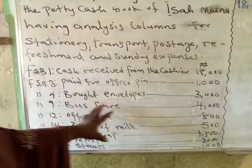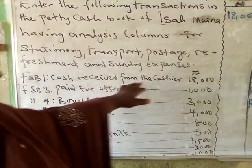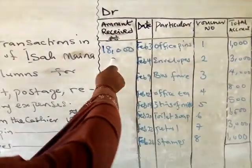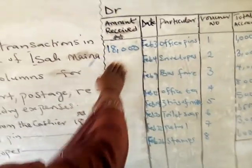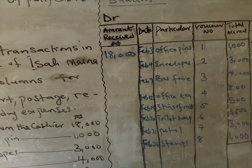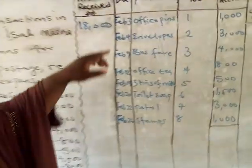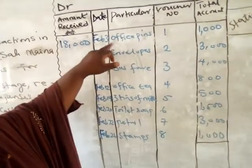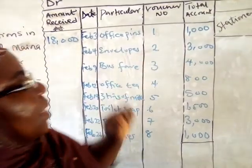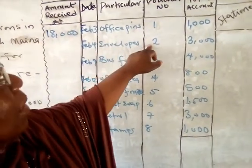During the month of February she paid for the following items. We start with the amount received, which is $18,000 — posted under the amount received column. On February 3rd she paid for office pin, voucher number 1, amount $1,000. On February 4th she paid for envelopes, voucher number 2, amount $3,000.